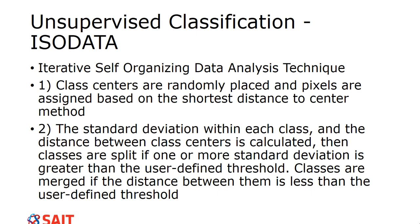The main unsupervised classification method ENVI uses is ISODATA — Iterative Self-Organizing Data Analysis Technique. It places class centers somewhat randomly, assigns pixels based on shortest distance to the center, then calculates a standard deviation. Classes are split if one or more standard deviations exceed a user-defined threshold, though the recommendation is to leave the default threshold settings alone.